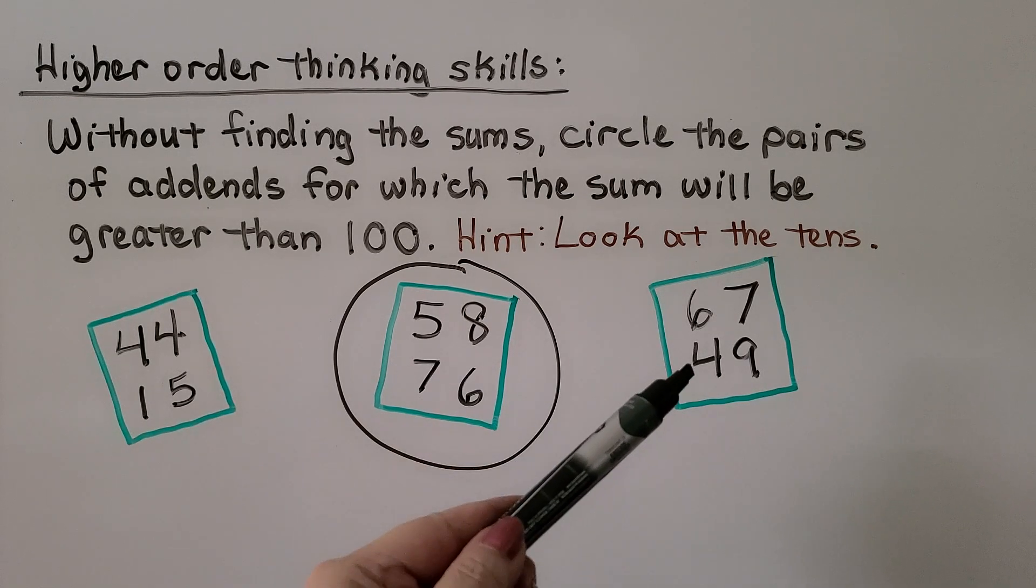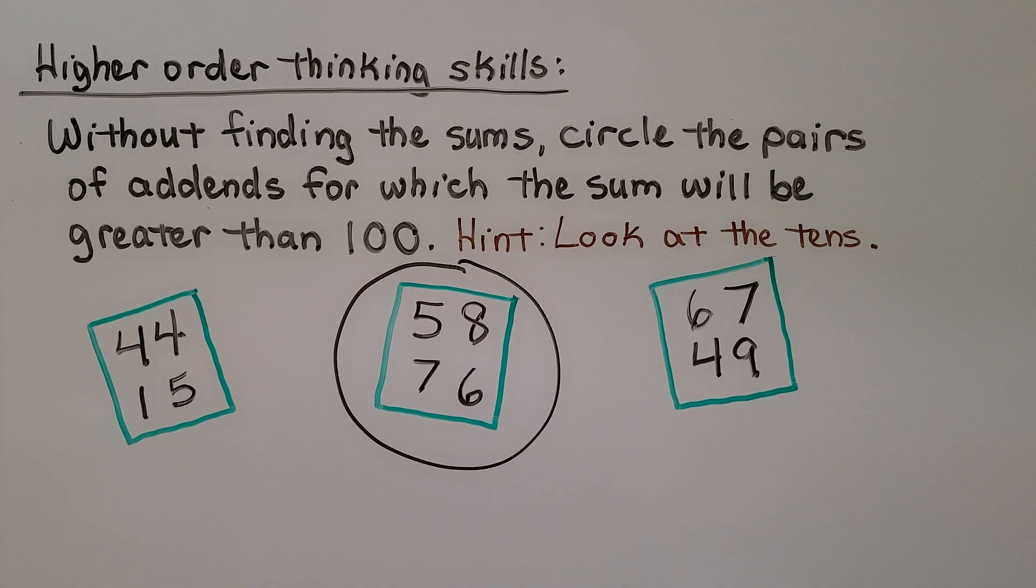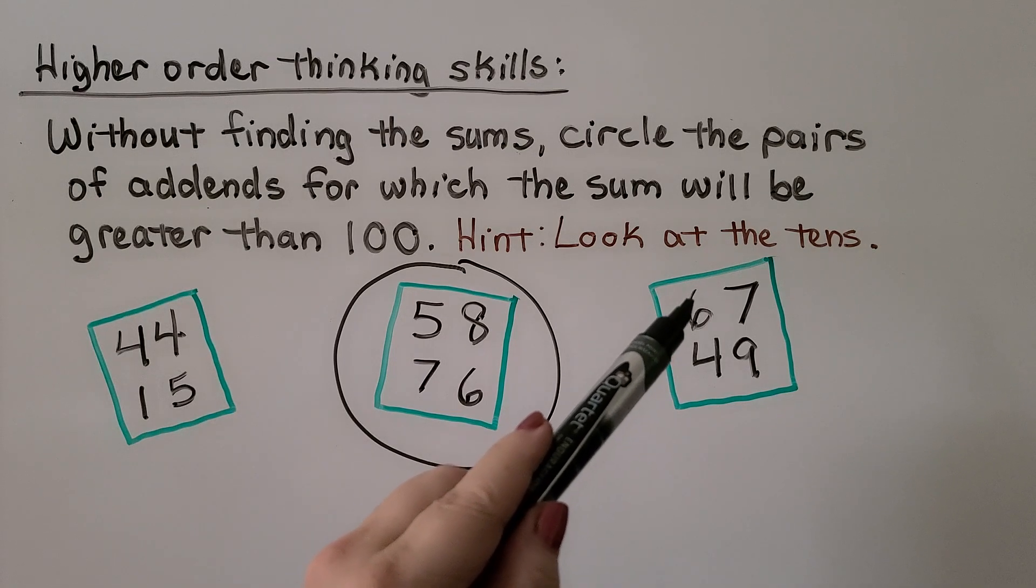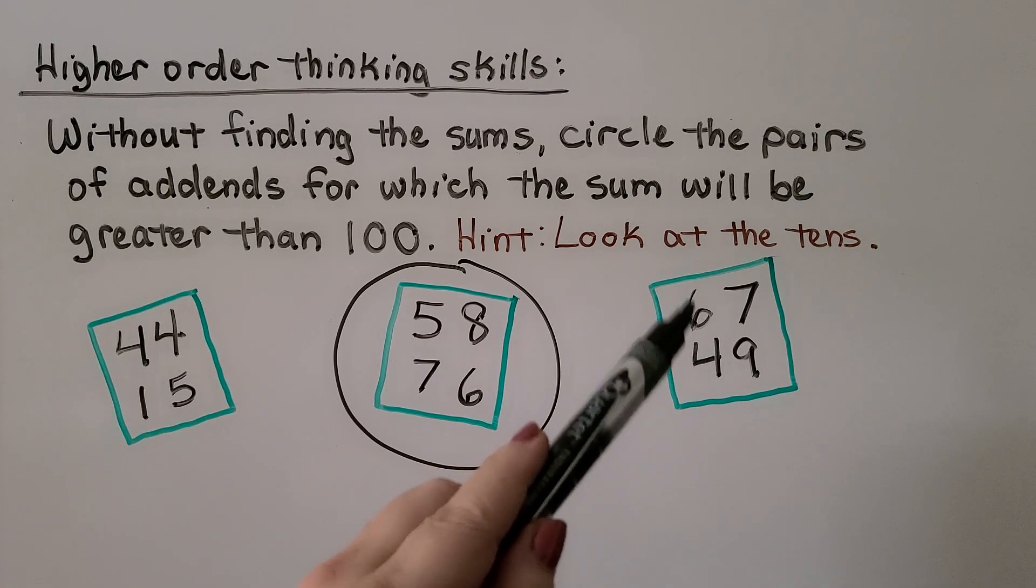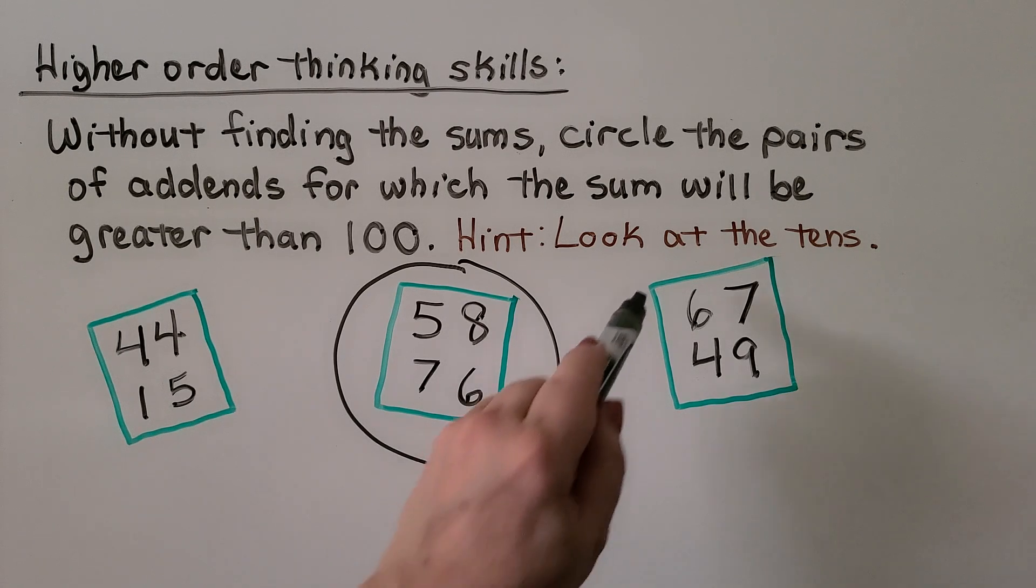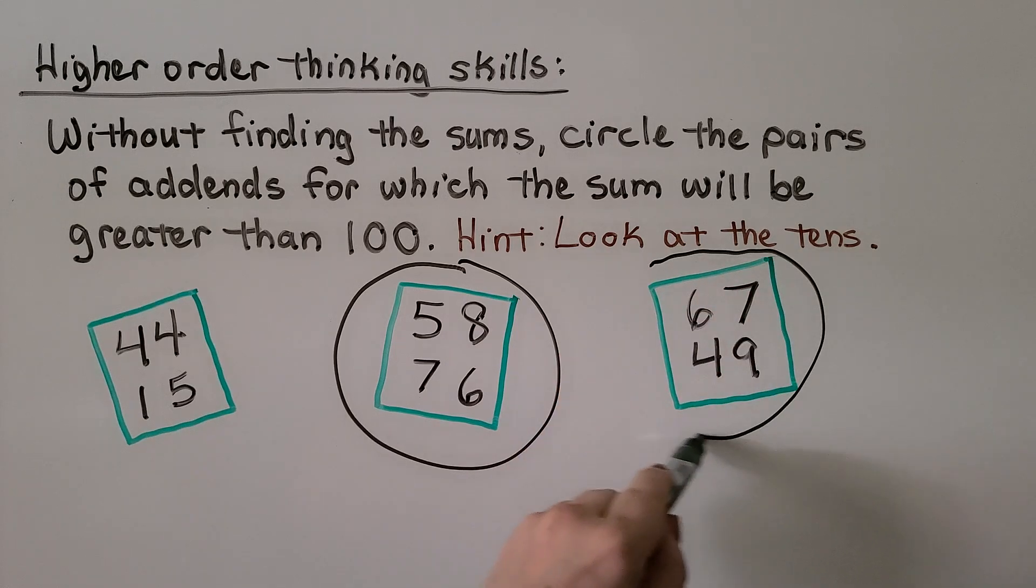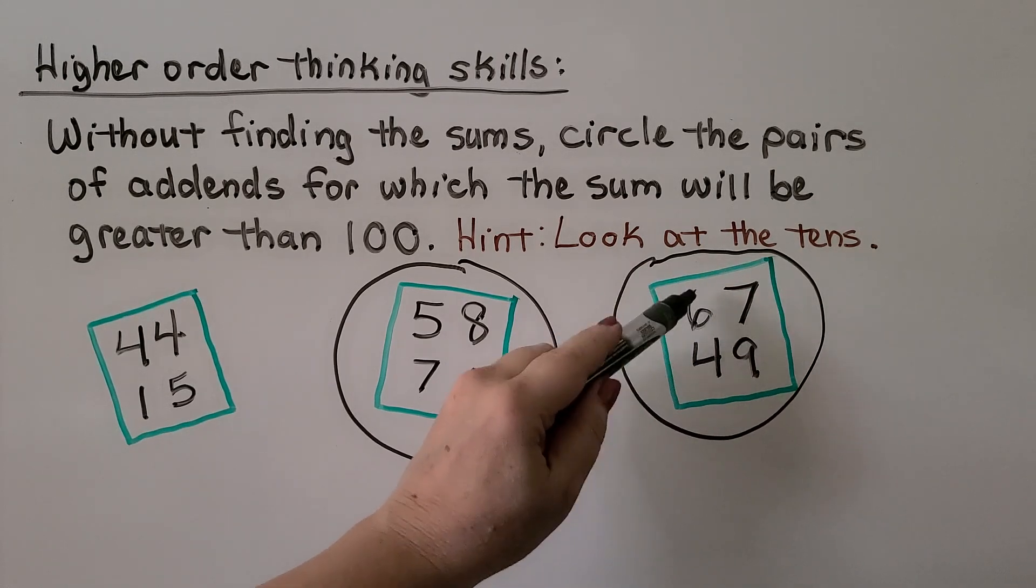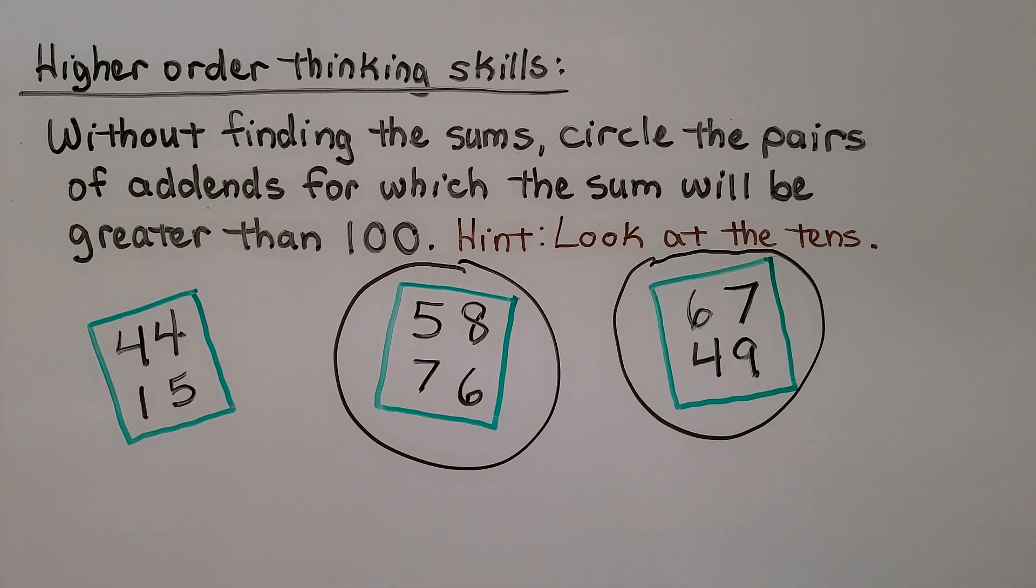What about 67 and 49? We look at the tens place. We have six tens and four tens. If you said yes, circle it, you're right. Because 60 + 40 = 100, and by the time we add the ones, we know we're going to be greater than one hundred. So we found two that will have sums greater than one hundred by looking at the tens.